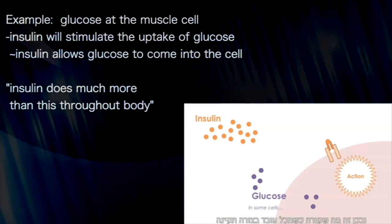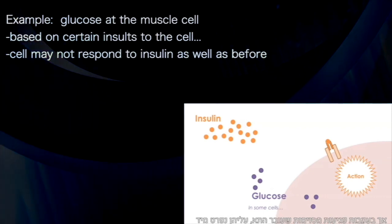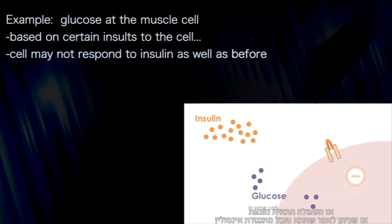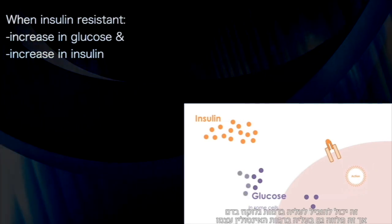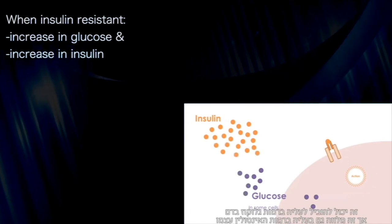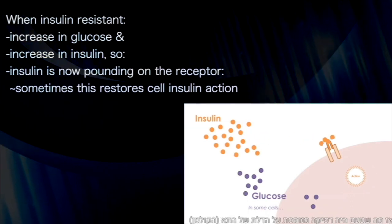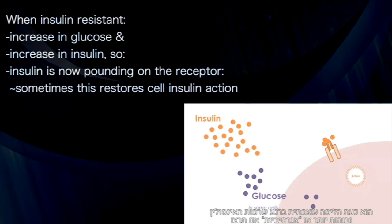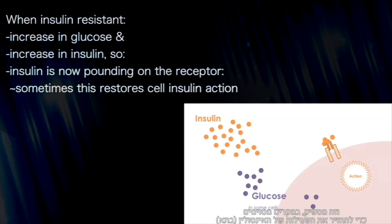This is when things are working right. However, based on certain insults to the cell, we can have a cell that doesn't respond as well to insulin as it used to. The action is compromised — the cell has become insulin resistant. This could result in an increase in blood glucose, and it is accompanied by an increase in insulin levels. What was once a polite knocking on the door of the insulin receptor now becomes a pounding as insulin is higher and more aggressive — and that is sufficient in some instances to restore the actions of insulin.